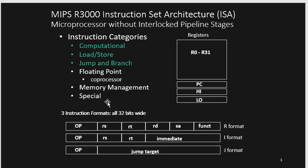These are the instruction formats in MIPS. You have the R format, the I format, and the J format. The R format covers basic arithmetic like addition, subtraction, multiplication, and also shift-related instructions. The I format is basically for branching, loading, and storing the word. And the J format is basically just for jumping — jump to this, jump to that.